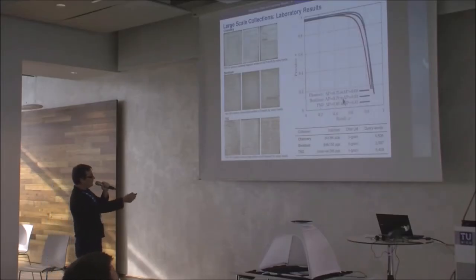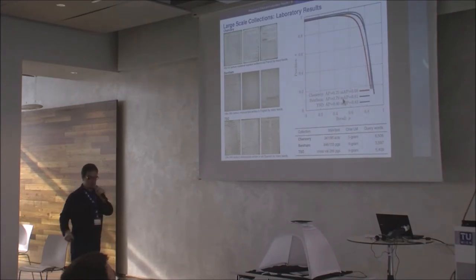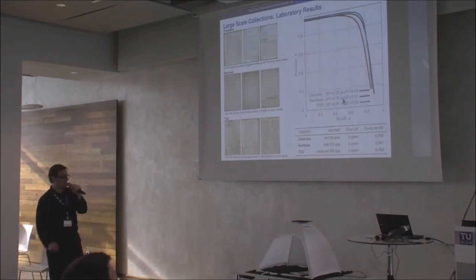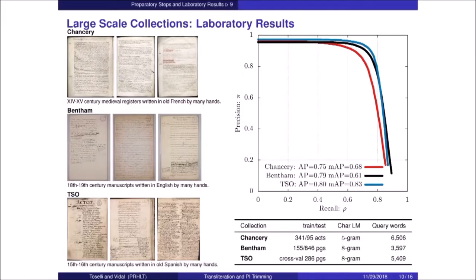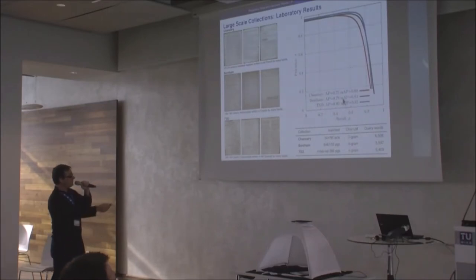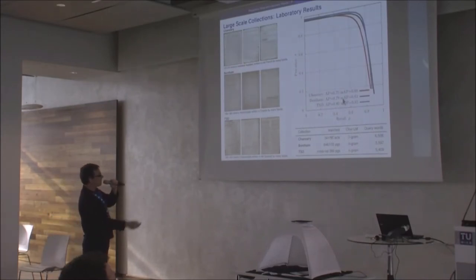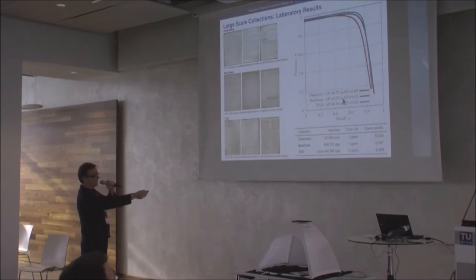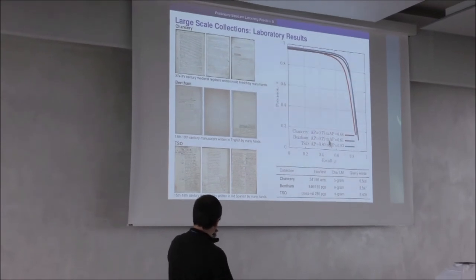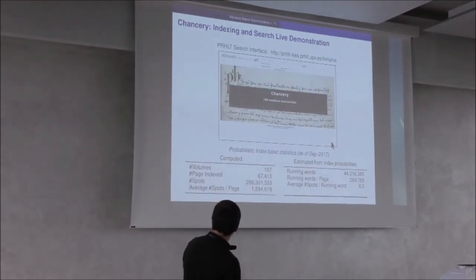These are the precision-recall curves. We conducted experiments on a small subset of each collection with ground-truth pages. This was trained and tested on the Chancery, Bentham, and Spanish Theater collections using a language model, tested on 20 query words per collection. The metric used is average precision — the area under the precision-recall curve — and results are broadly similar across collections.